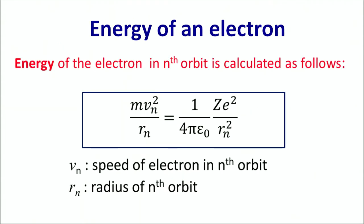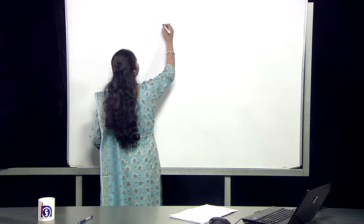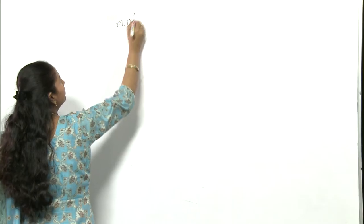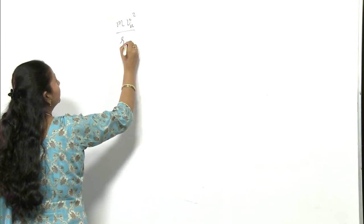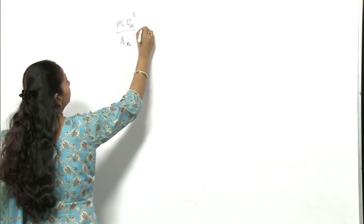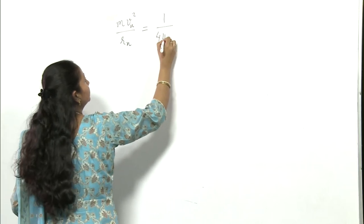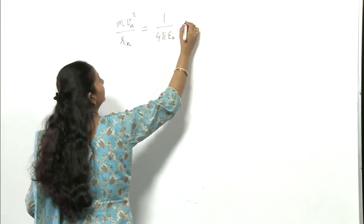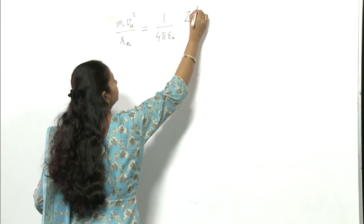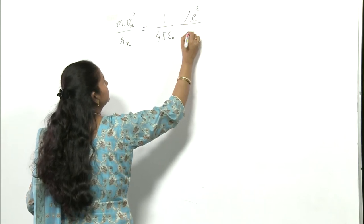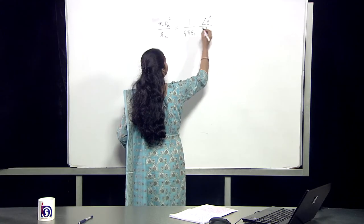So, the energy of the electron in the n-th orbit is calculated as follows. We know that centripetal force, that is mv² / rn, is equal to the Coulomb force of attraction, which is given by (1 / 4πε₀) × ze² / rn².